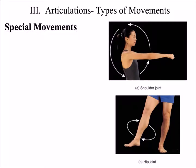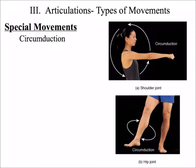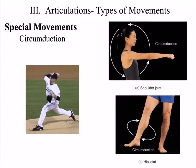Finally, there are special movements that occur in multiple planes, such as circumduction. Circumduction is a conical or circular movement that occurs across different planes. An example of circumduction is the motion of pitching a baseball.